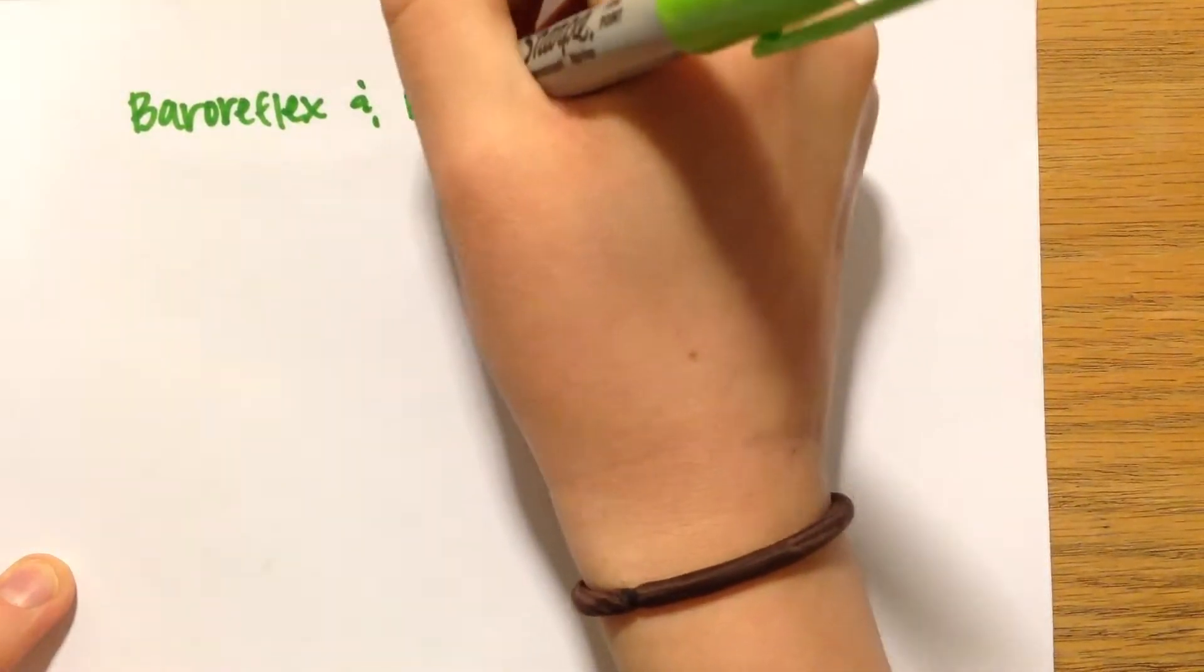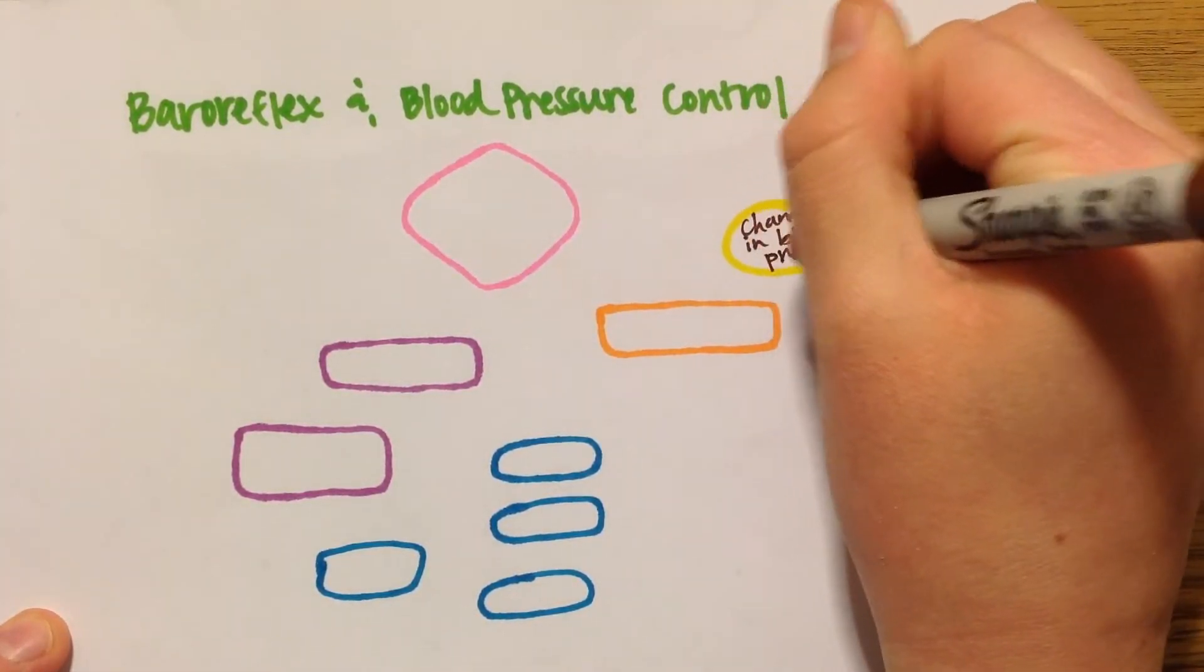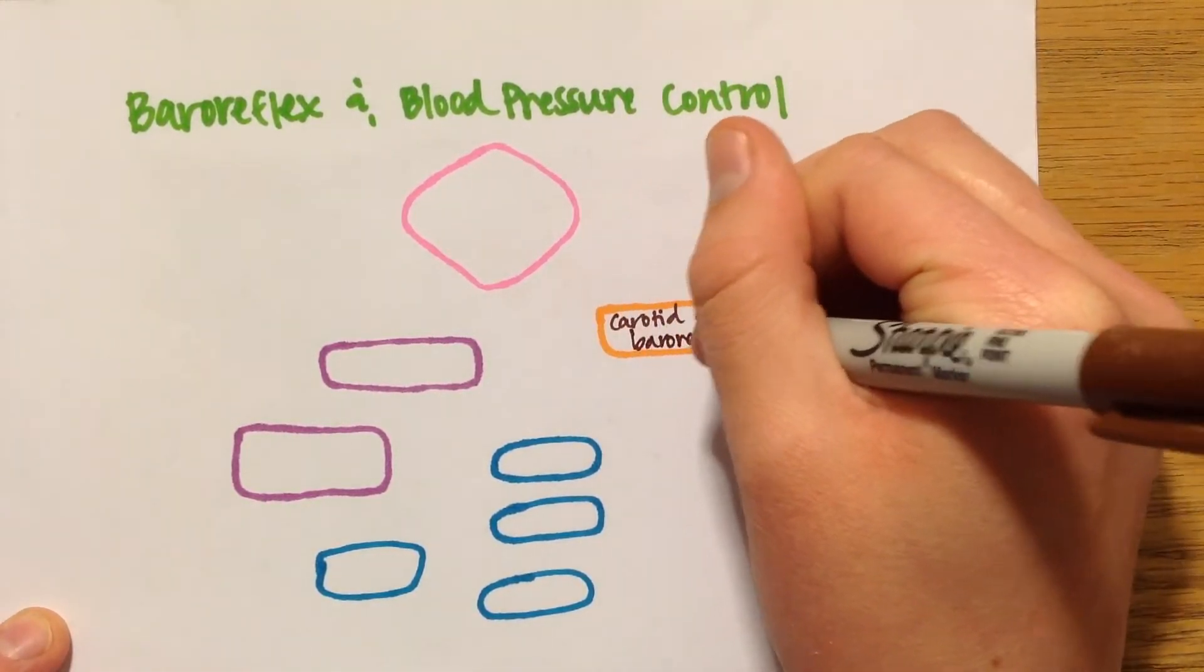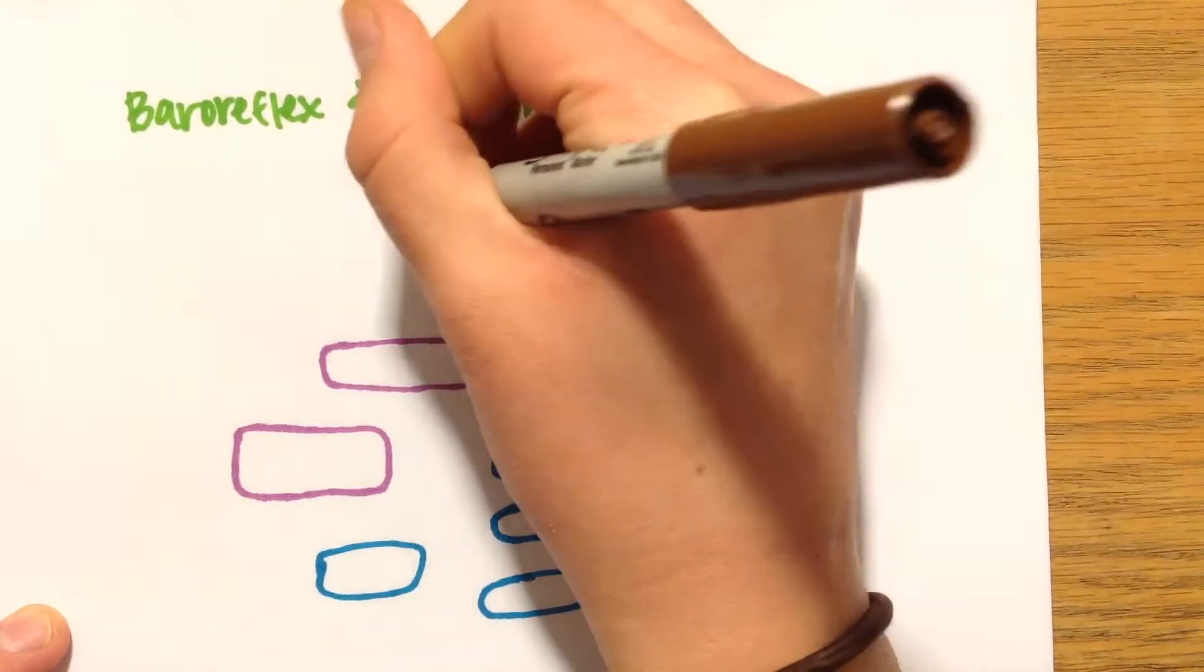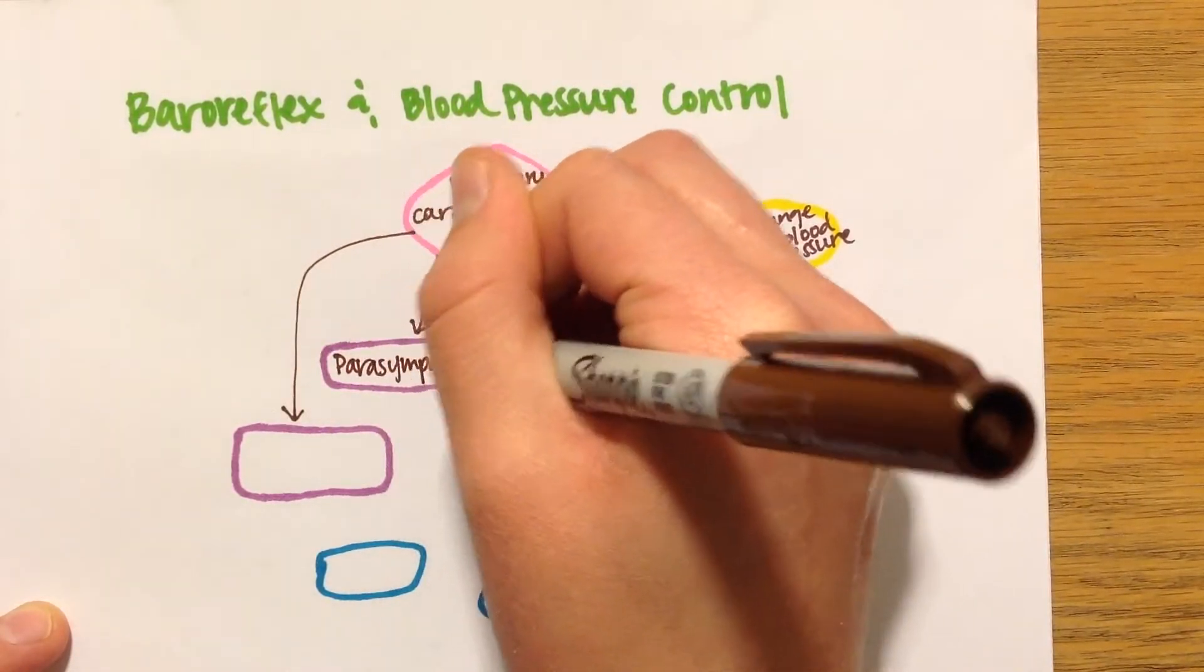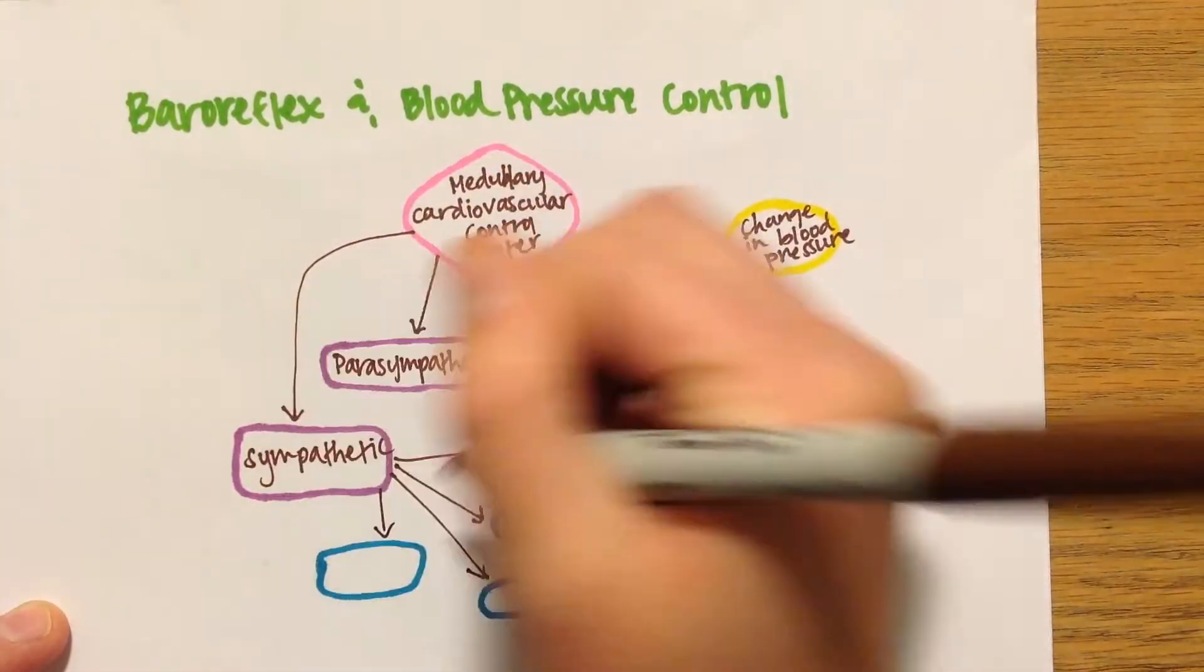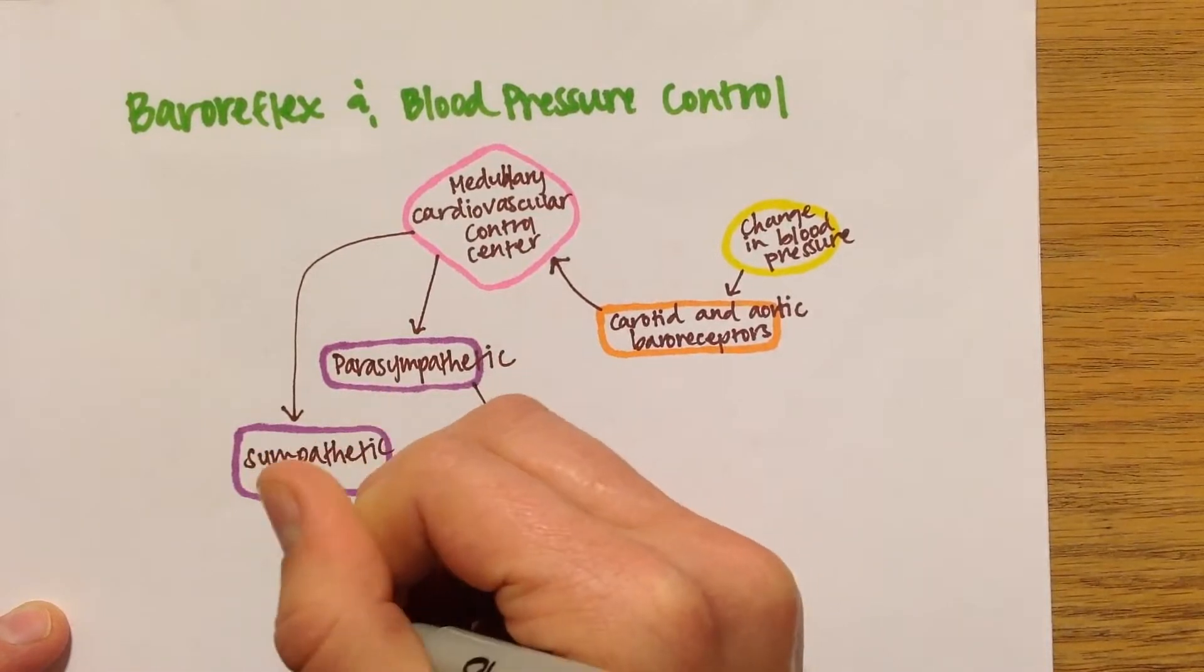The baroreflex is what helps to control blood pressure in the body. When there is a change in blood pressure, the baroreceptors, which are located on the carotid artery and the aorta, sense it. They signal to the cardiovascular control center in the medulla. This control center then may send signals through either the sympathetic or the parasympathetic neurons. I will talk more about the effects of the parasympathetic and sympathetic systems in the next section of this video.